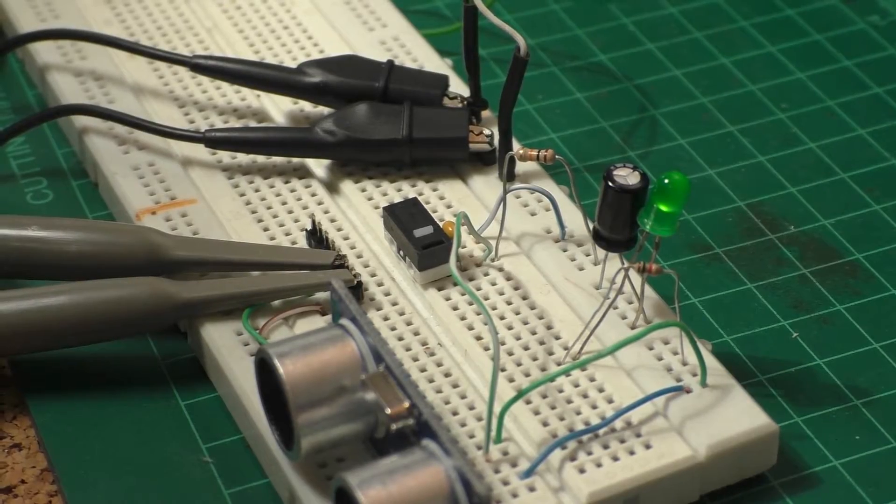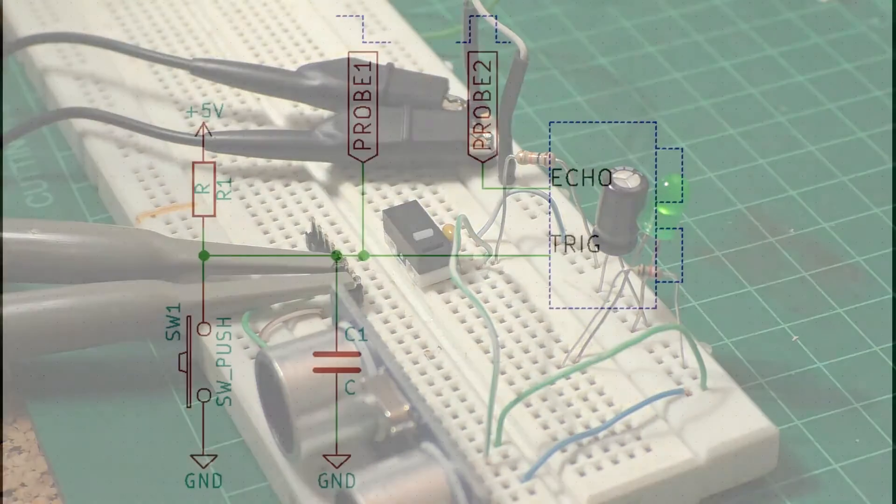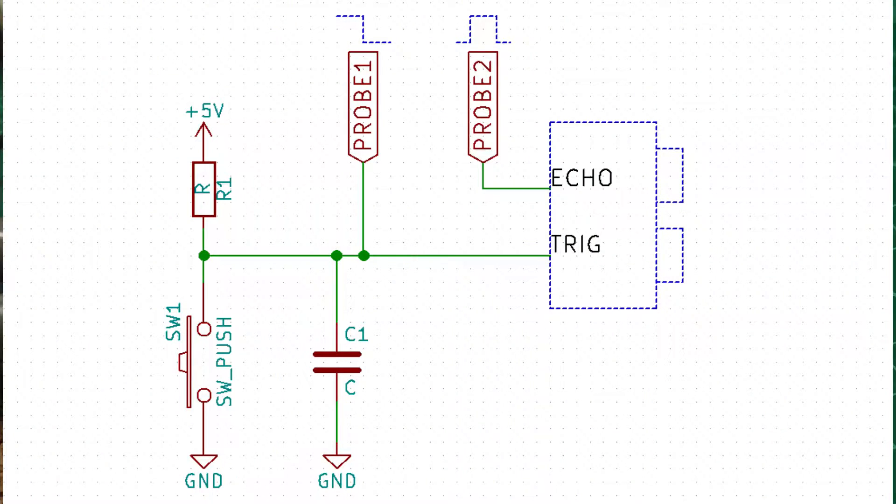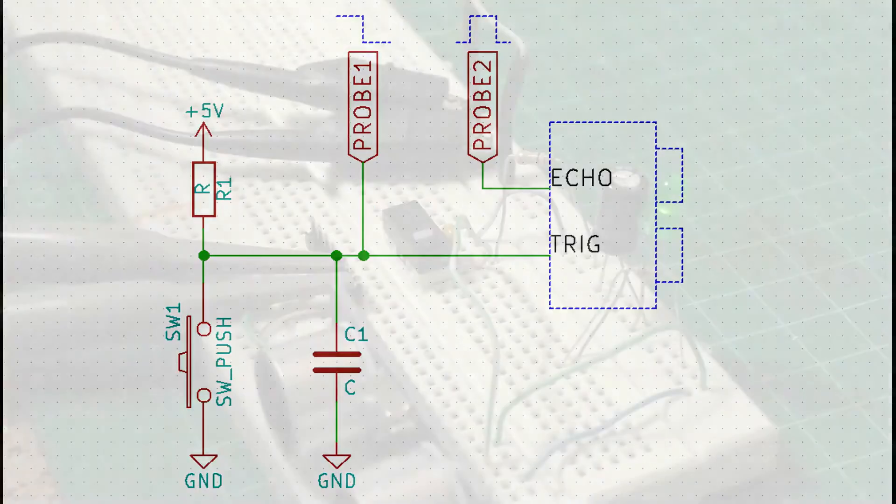OK, so that's our very simple circuit to trigger the sensor. The sensor is triggered with a falling edge on its trigger input, so I'm generating a falling edge with a simple push button, a pull-up resistor, and a debouncing cap.